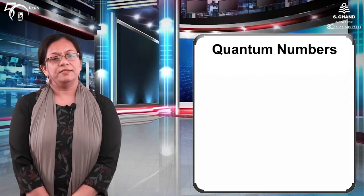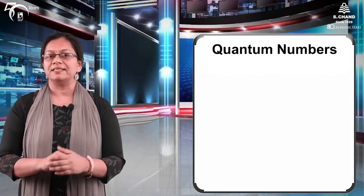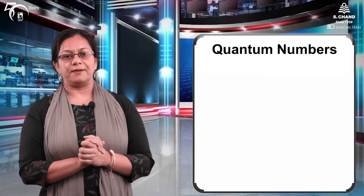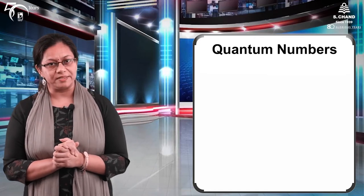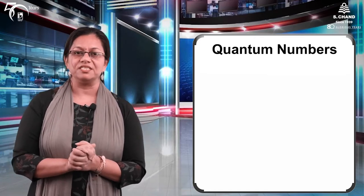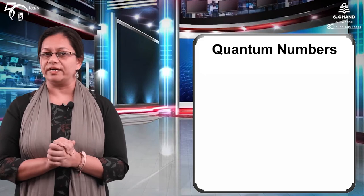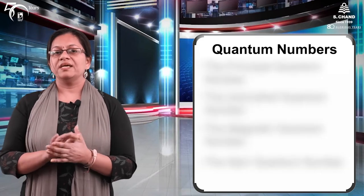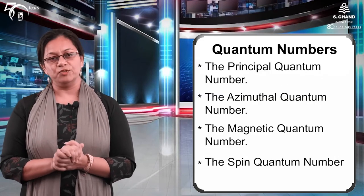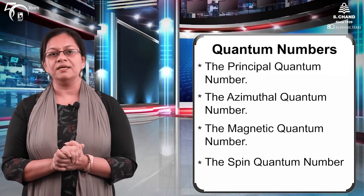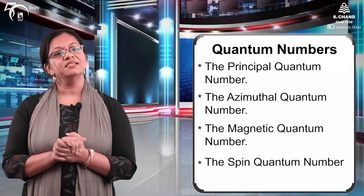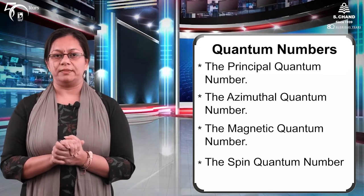After this, hamara concept aata hai quantum numbers ka. Quantum numbers chaar hote hain — the principal quantum number, azimuthal quantum number, magnetic quantum number, and the spin quantum number.